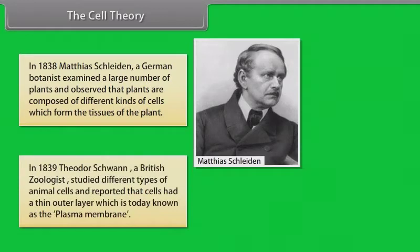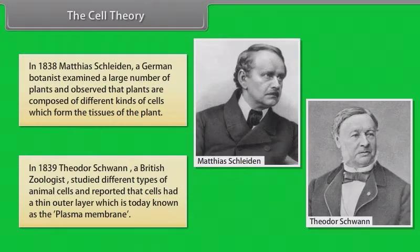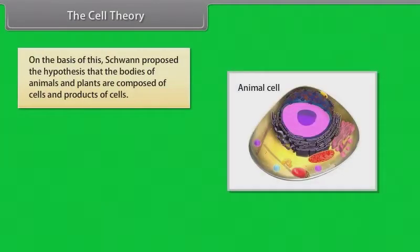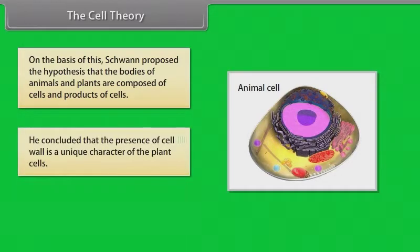In 1839, Theodore Schwann, a British zoologist, studied different types of animal cells and reported that cells had a thin outer layer, today known as the plasma membrane. On this basis, Schwann proposed the hypothesis that the bodies of animals and plants are composed of cells and products of cells. He concluded that the presence of cell wall is a unique character of plant cells.